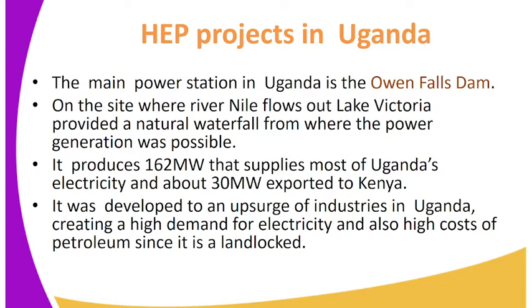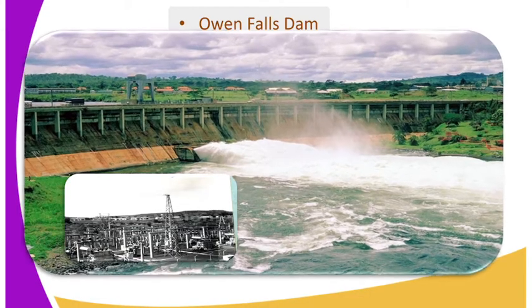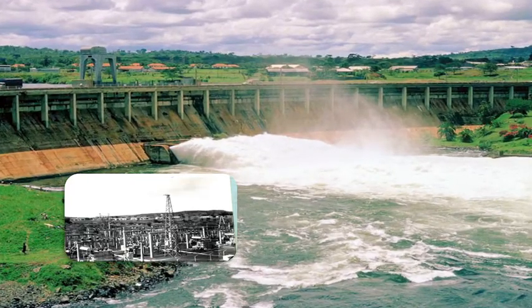About 30 MW is exported to Kenya. It was developed due to an upsurge of industries in Uganda, creating a high demand for electricity and also high cost of petroleum since it is a landlocked country. On the screen we can see the Owen Falls Dam, which is a major power generating plant in Uganda.